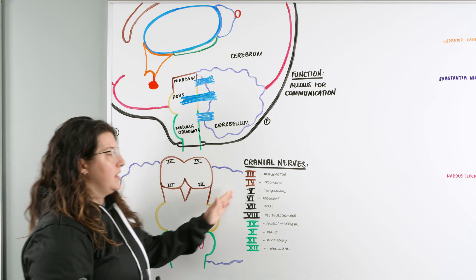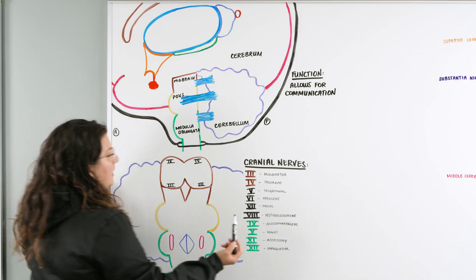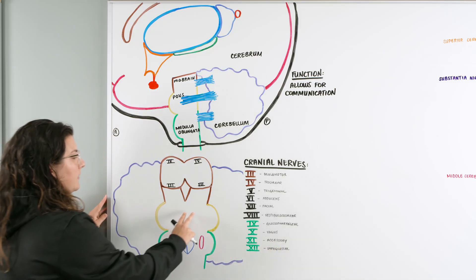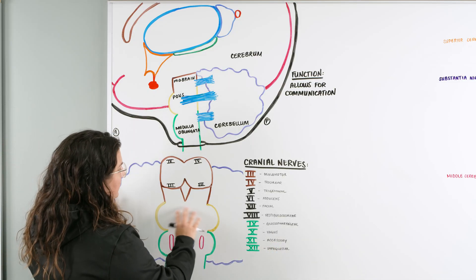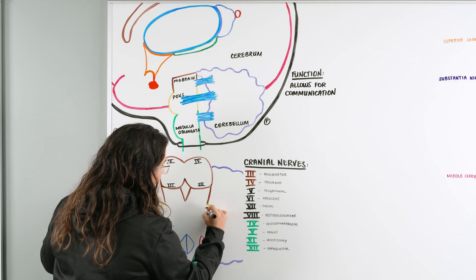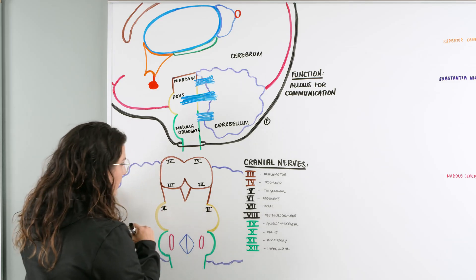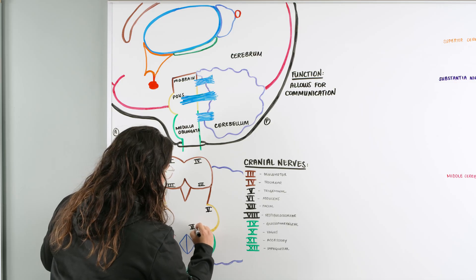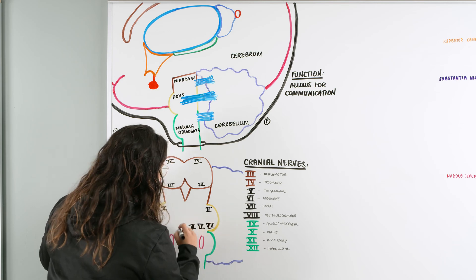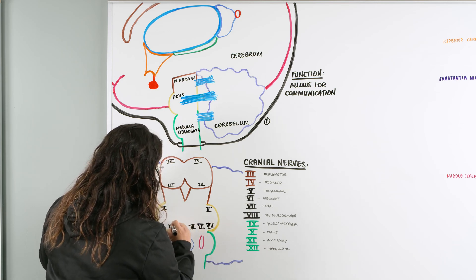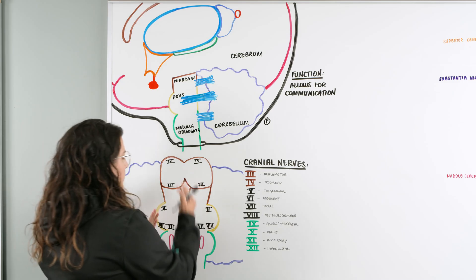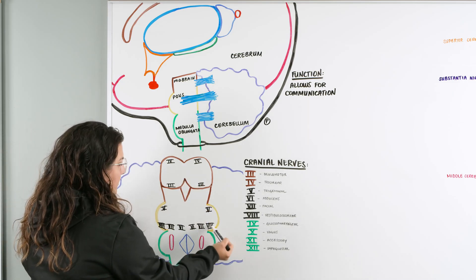Moving down into the pons, there are four cranial nerves: five, six, seven, and eight — trigeminal, abducens, facial, and vestibulocochlear. These all exit anteriorly and are mirrored on both sides of the pons.